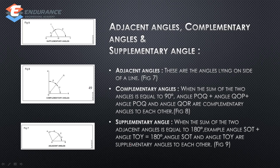The next ones are adjacent angle, complementary angle, and supplementary angle. Adjacent angles share a common side and a common vertex. Complementary angles add up to 90 degrees. If you add two adjacent angles and they equal 180 degrees, that is a supplementary angle.